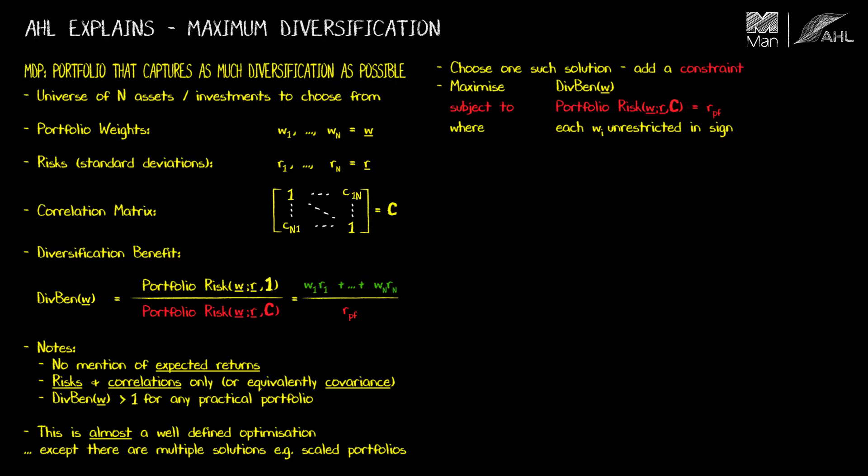So my optimization problem I can rewrite as this. Now that is exactly the same form problem as we solved in the optimization chapter of AHL Explains, except that the expected returns in the objective function have been replaced with the individual risks.